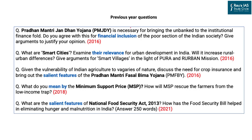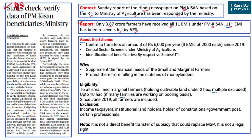From the UPSC trend perspective, previous year questions from 2016, 2018, and 2021 in GS Paper 3 mains examination in the economic section have asked scheme-related questions — on Pradhan Mantri Jan Dhan Yojana, Smart Cities, Pradhan Mantri Fasal Bima Yojana, Minimum Support Price, and the National Food Security Act 2013 — covering different dimensions like financial inclusion, urban development, and salient features. We are going to analyze what PM Kisan Samman Nidhi is all about and the benefits and limitations for India's agriculture sector.